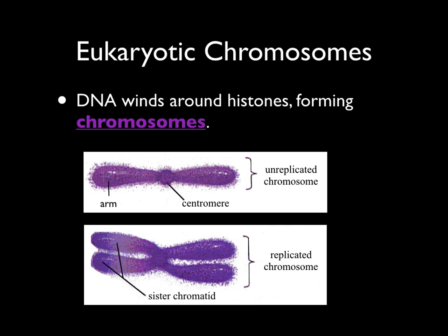Having an understanding of the structure of the replicated chromosome is particularly important when we begin talking about what actually happens when a cell divides. Eventually, those two sister chromatids will be separated so that each of the two daughter cells produced will contain one of those sister chromatids. We want to make sure that the cells produced as a result of division have a copy of the genetic material. Make sure you're comfortable with the structure of the replicated chromosome.